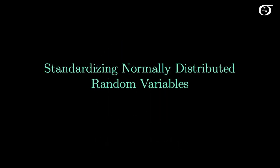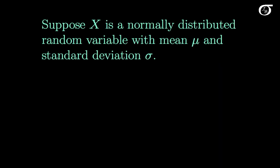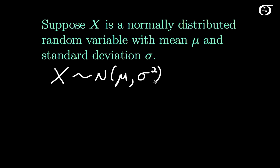Let's talk about standardizing normally distributed random variables. Suppose X is a normally distributed random variable with mean mu and standard deviation sigma, which we sometimes write notation-wise as X is distributed normally with a mean of mu and a variance of sigma squared. This is not universal notation but it is pretty standard — X distributed normally with mean mu, variance sigma squared, and standard deviation sigma.